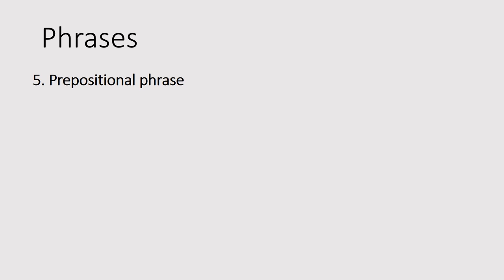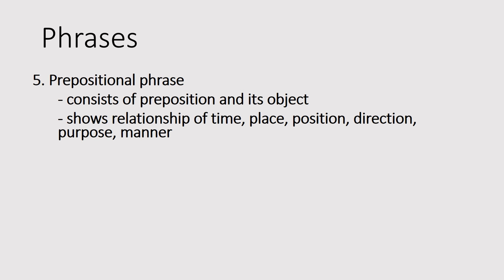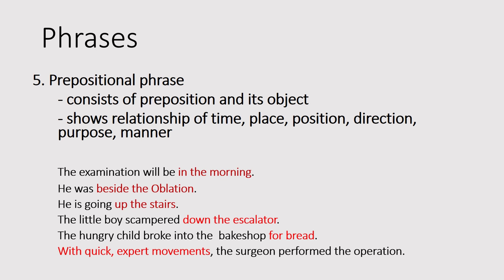Lastly, we have the prepositional phrase — a preposition plus the object of the preposition. Prepositional phrases show relationships of time, place, position, direction, purpose, and manner. Examples: 'The examination will be in the morning' indicates time; 'He was beside the oblation' indicates place; 'He's going up the stairs' and 'The little boy scampered down the escalator' indicate direction; 'The hungry child broke into the big shop for bread' shows purpose; 'With quick, expert movements, the surgeon performed the operation' indicates manner.